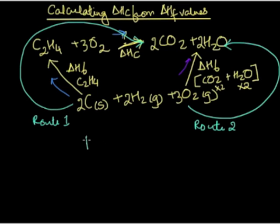So route 1 is equal to route 2. I'm going to call this 2 and plus enthalpy change of formation as 1.